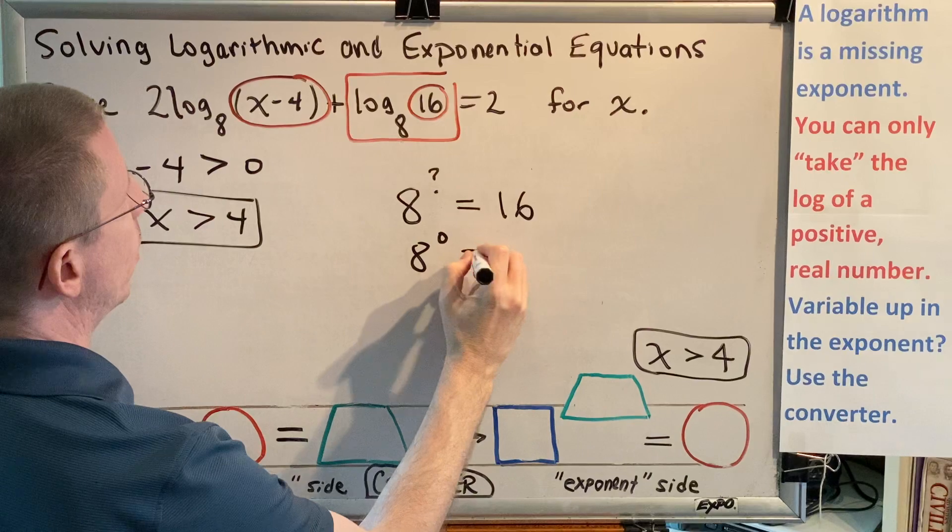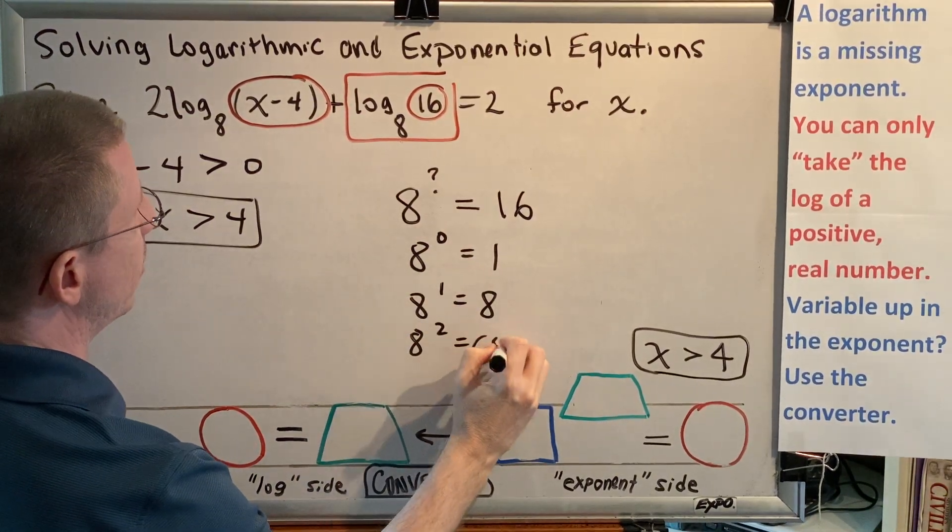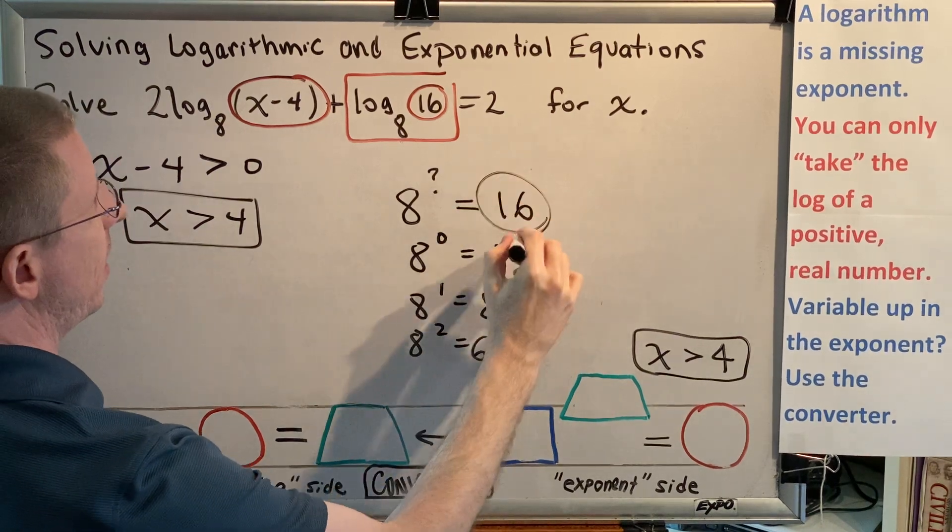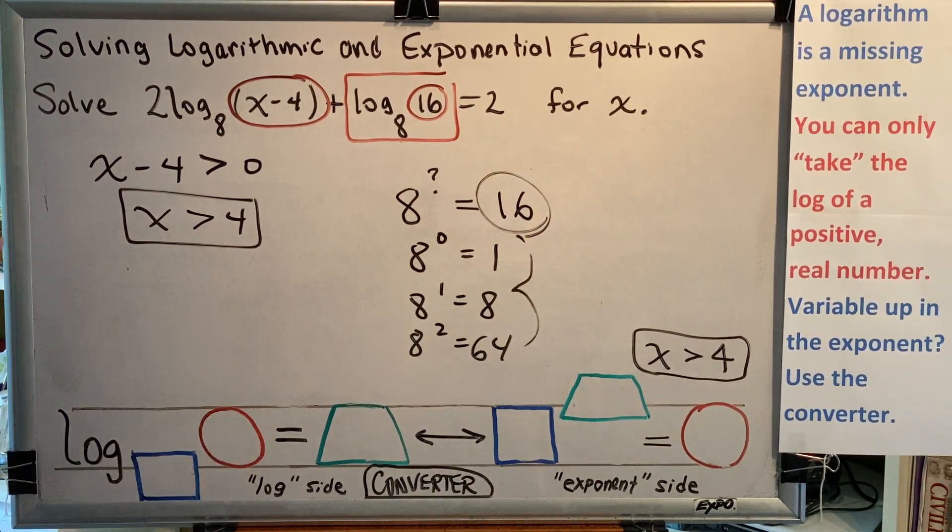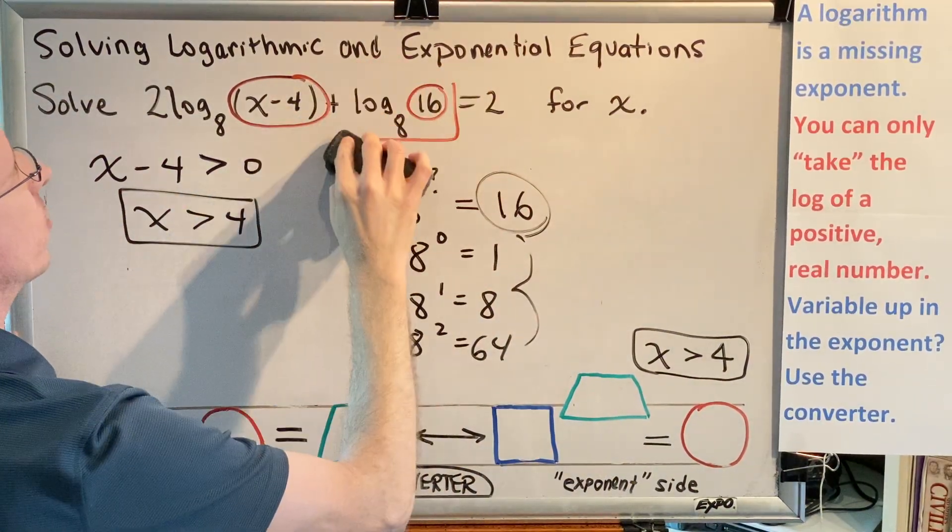8 raised to the 0 would be 1. 8 raised to the 1 would be 8. 8 raised to the 2 would be 64. We didn't get a 16 anywhere in there. So for that reason, we're simply going to have to solve this using our log properties.